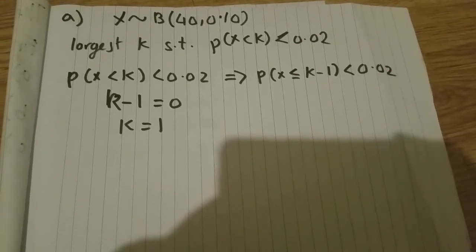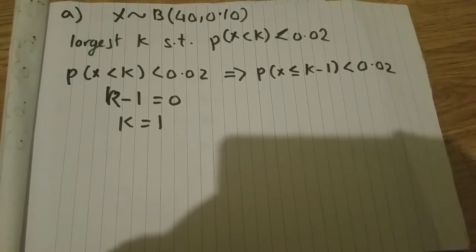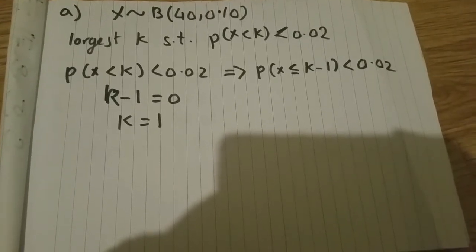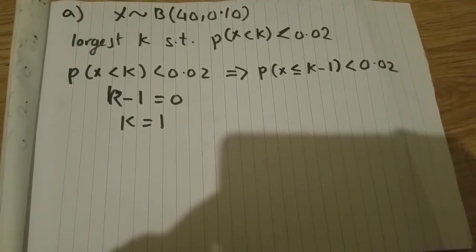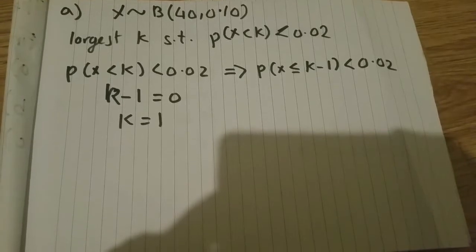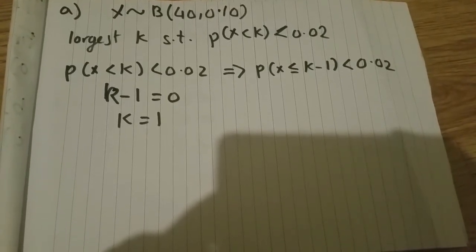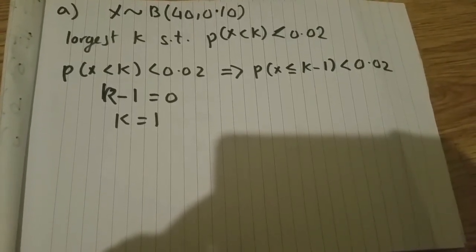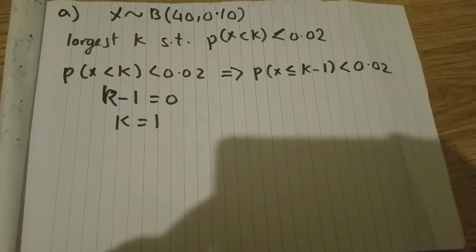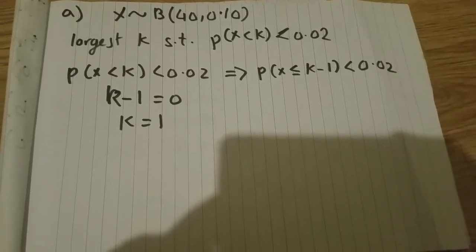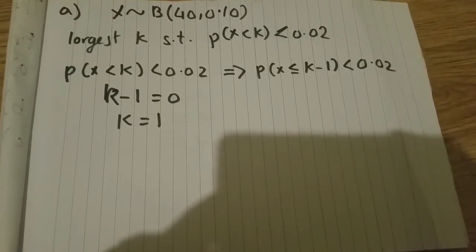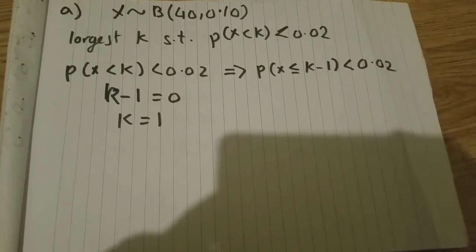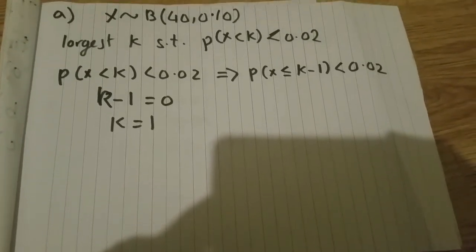Once we get that from the table being less than 0.02, if you go to the table for n=40 and p=0.10, you'll see there's only one value that's less than 0.02, and that's 0 itself. So we have k-1=0, which means k=1.